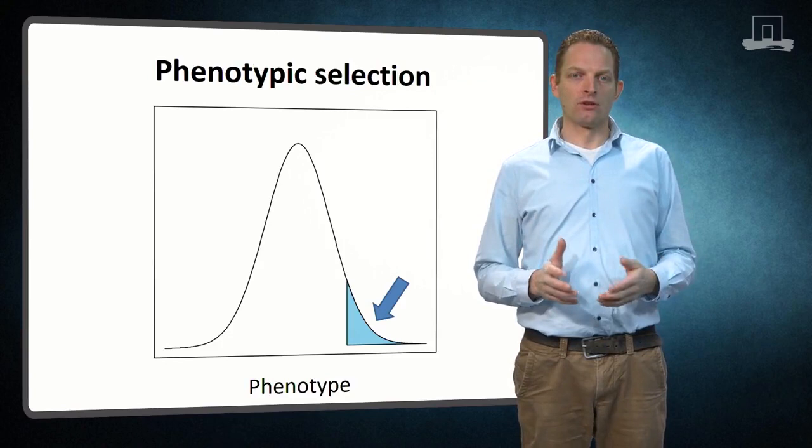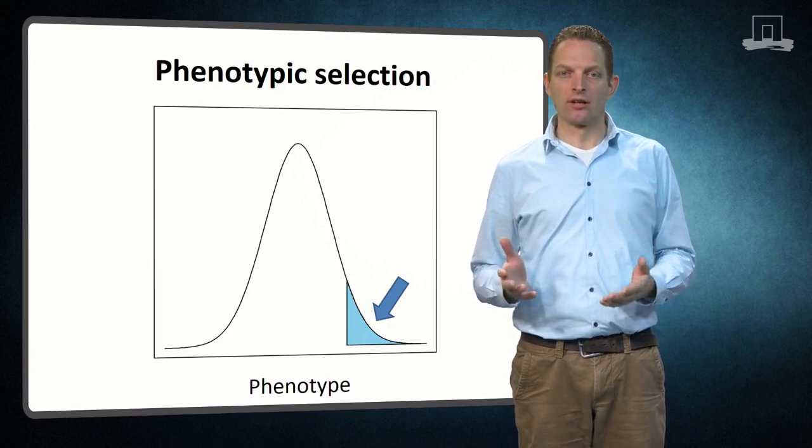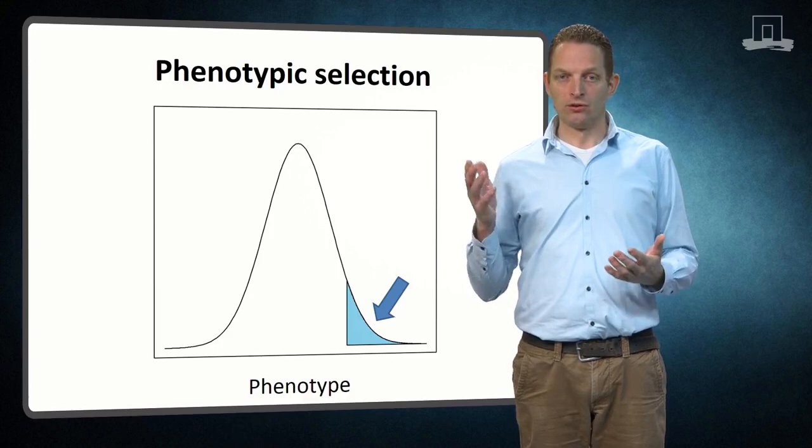The simplest method of selection is so-called phenotypic selection. This strategy simply ranks the individuals based on their phenotypic performance and selects the individuals with the highest performance.